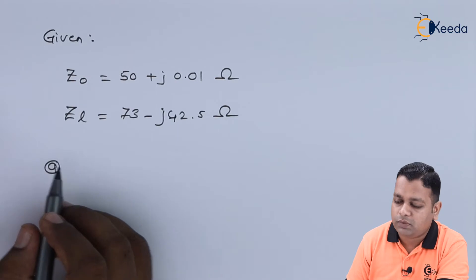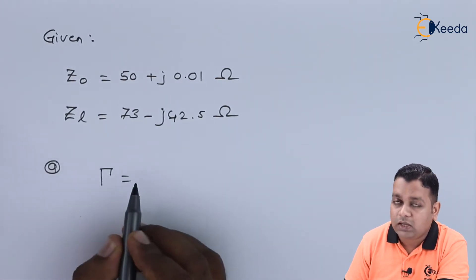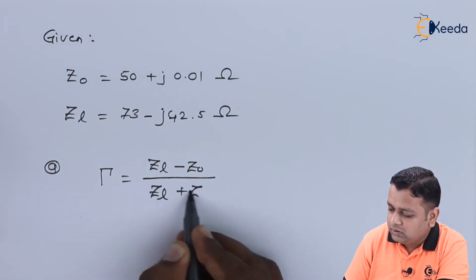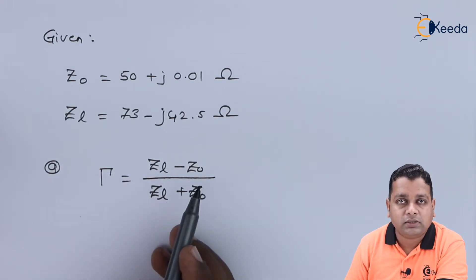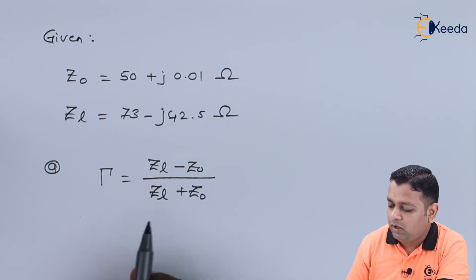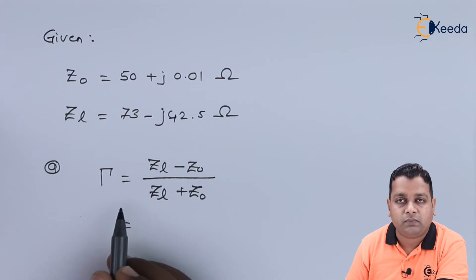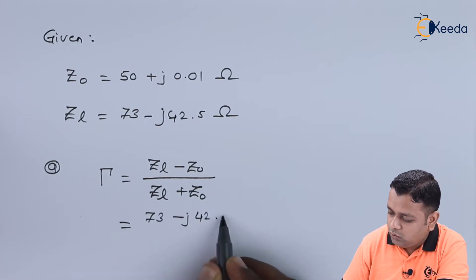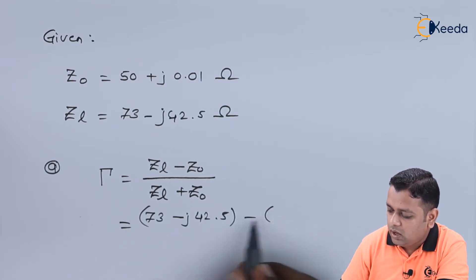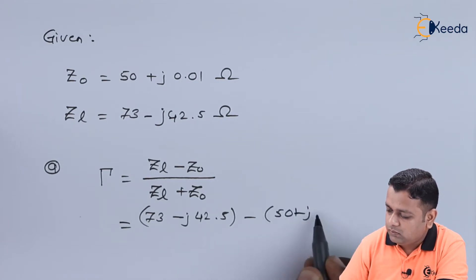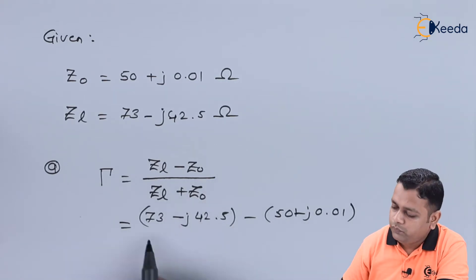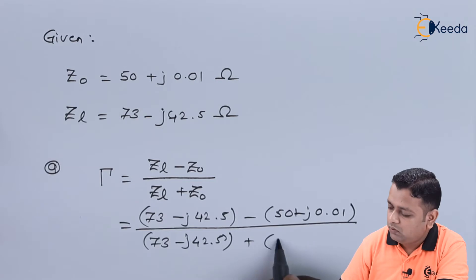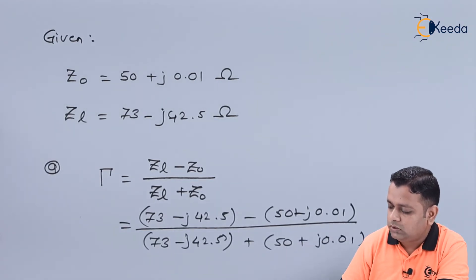For part a, the reflection coefficient, denoted by gamma, is expressed by the formula: gamma equals (Z_L minus Z₀) divided by (Z_L plus Z₀). The difference between the load impedance and the characteristic impedance, along with their sum, is required in the numerator and denominator respectively. Substituting the values, we have (73 minus j×42.5) minus (50 plus j×0.01) in the numerator.